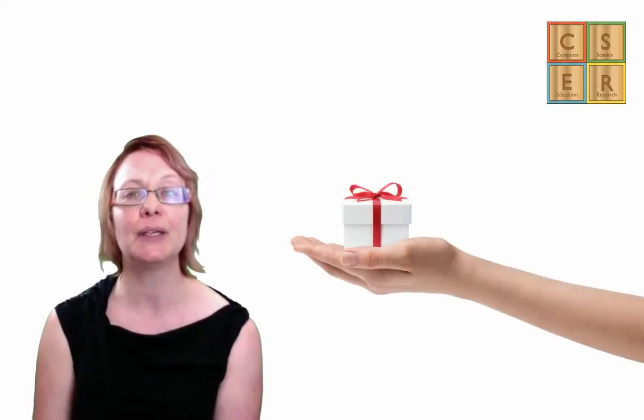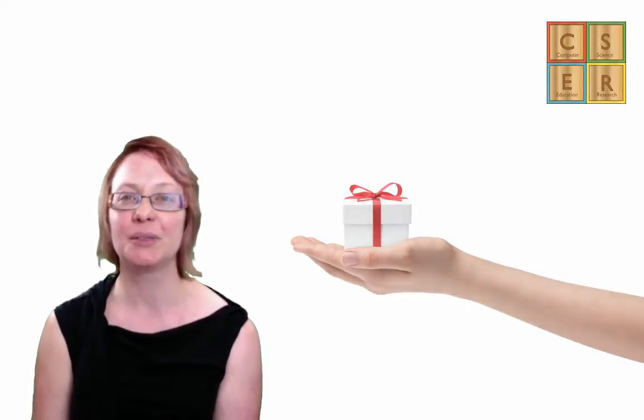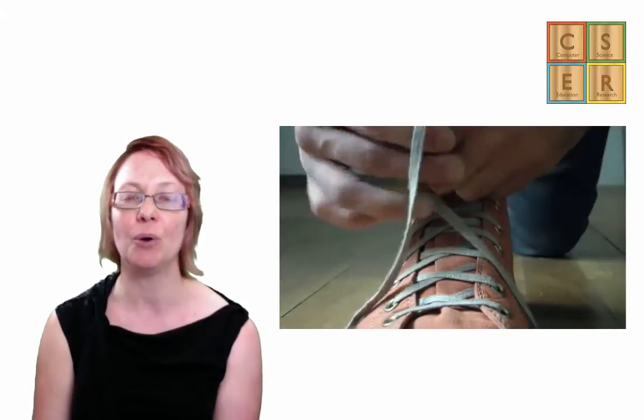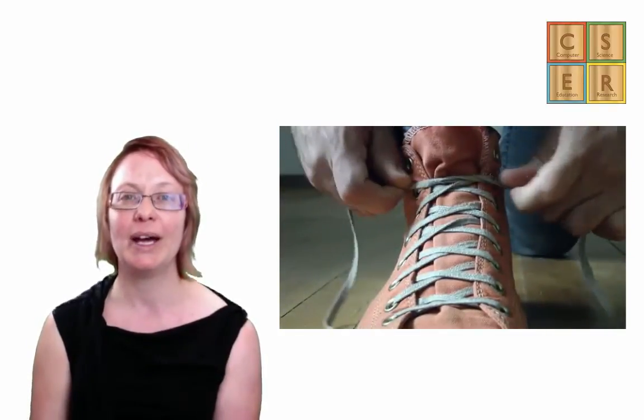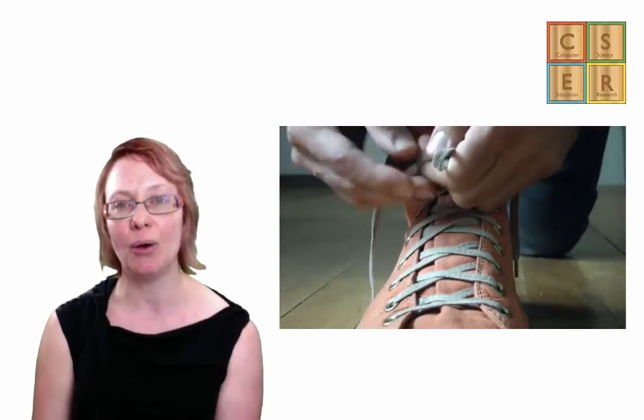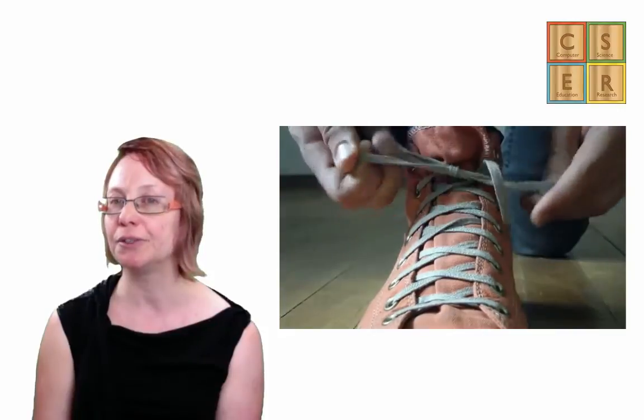Some easy examples to explore abstraction that you might be able to find in your own classroom include things like tying a bow. Tying a bow is a common task. You can tie a bow in your shoelaces, you can tie a bow in a hair ribbon, or in a ribbon on a gift. We are able to take the process of tying a bow and apply it to a wide range of circumstances.